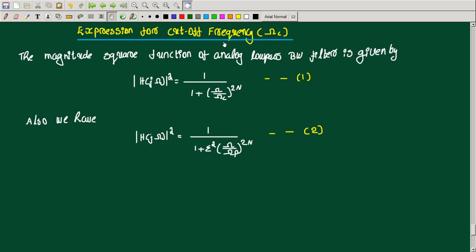We also derived the expression for the cutoff frequency omega_c. The magnitude squared function of the analog lowpass Butterworth filter is given by: |H(jω)|² = 1 / (1 + (ω/ω_c)^(2N)).